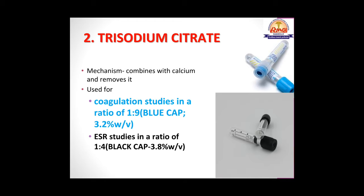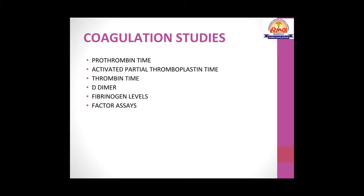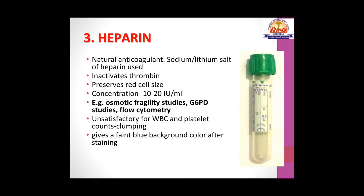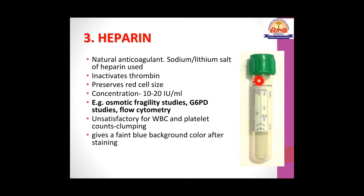ESR studies using the Westergren method are done with the black vial. Coagulation studies include prothrombin time, activated partial thromboplastin time, thrombin time, D-dimer, fibrinogen levels, and factor assays. The green cap vacutainer contains heparin as an anticoagulant, which can be sodium or lithium salt. Its mechanism is that it inactivates thrombin. Heparin preserves red cell size, so it is used in osmotic fragility studies.